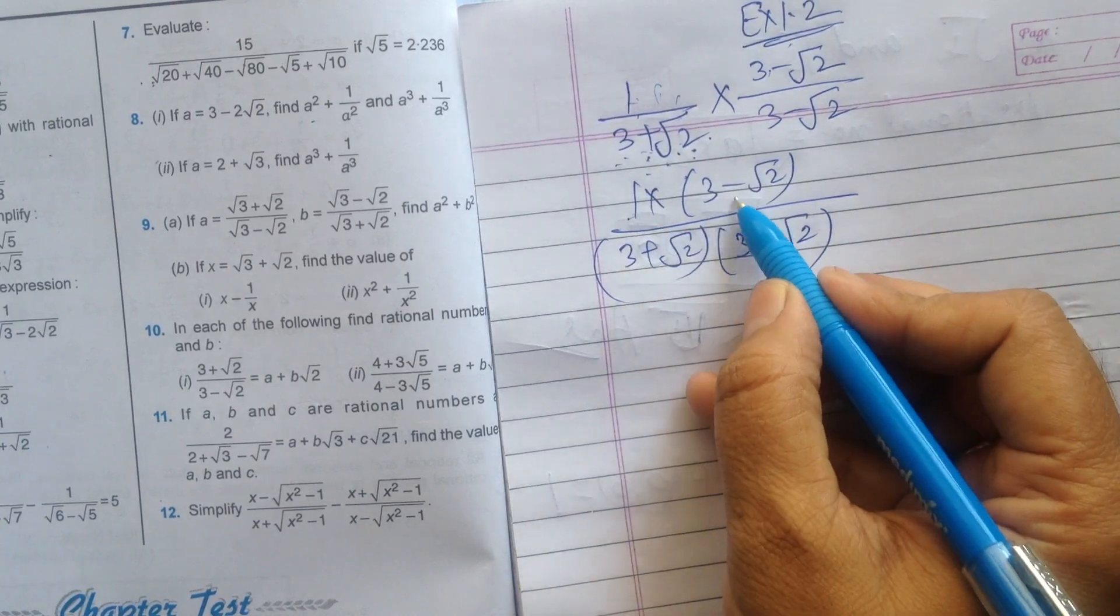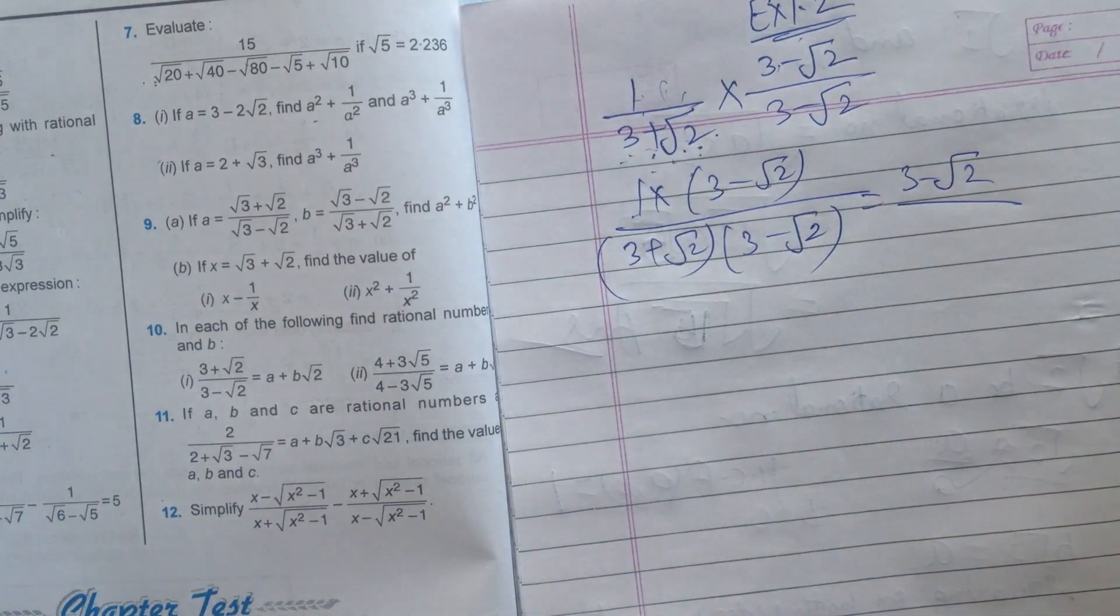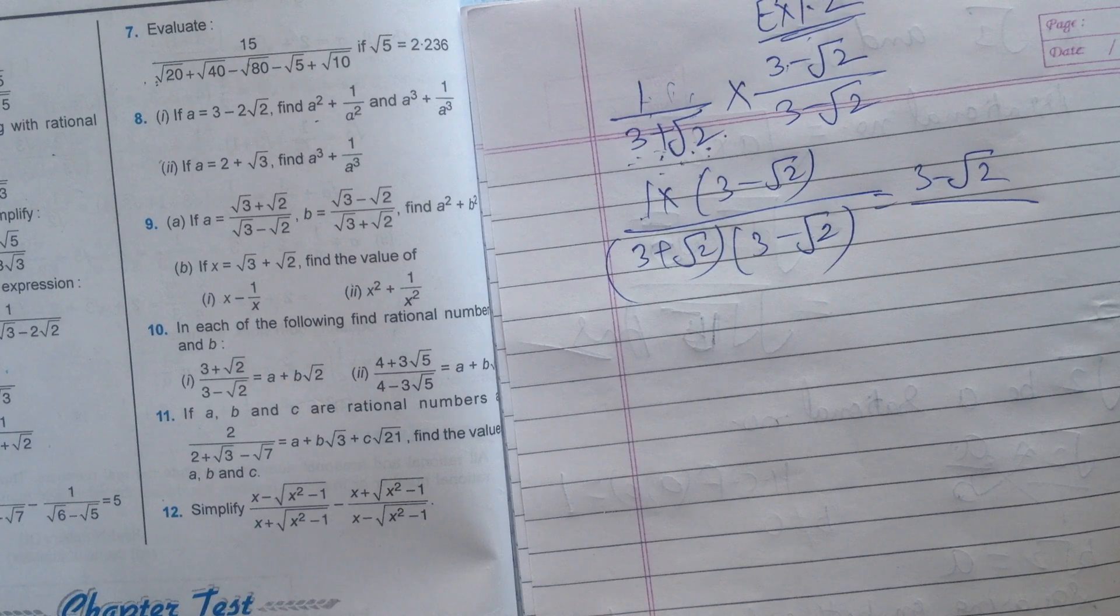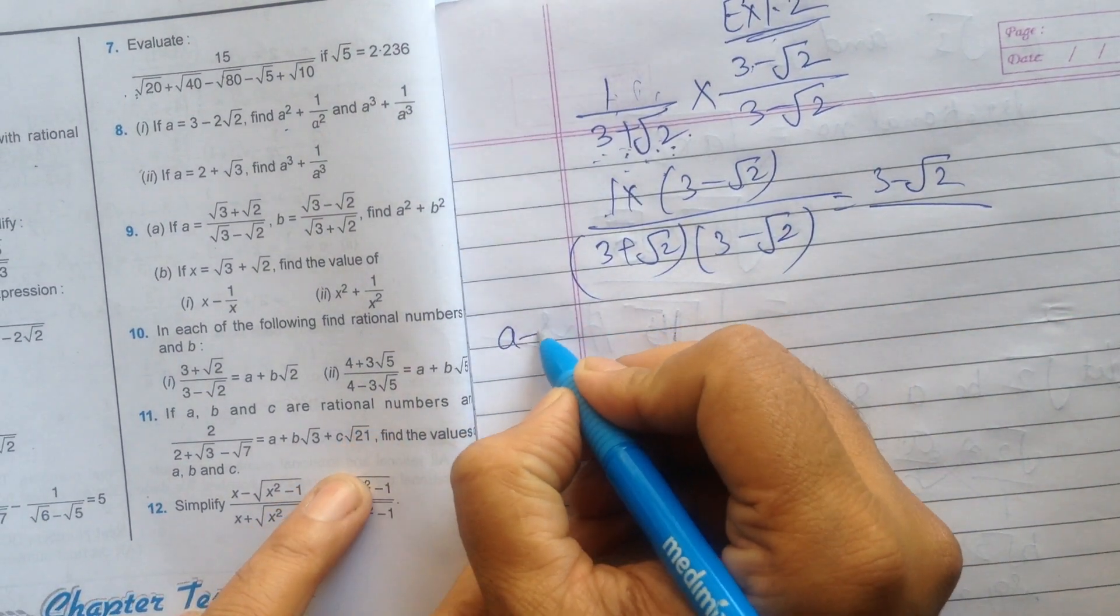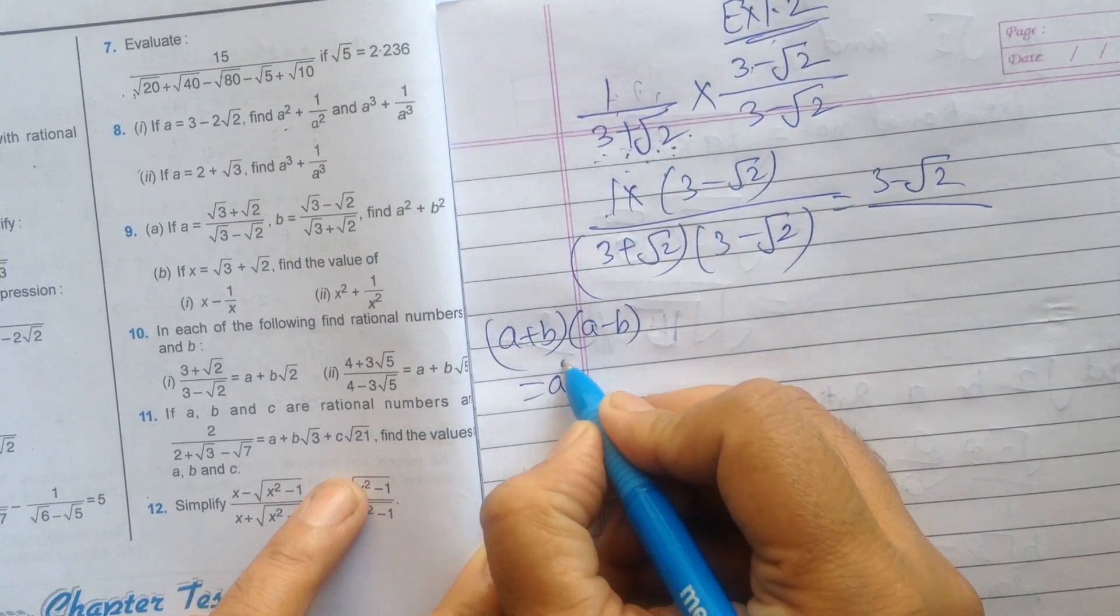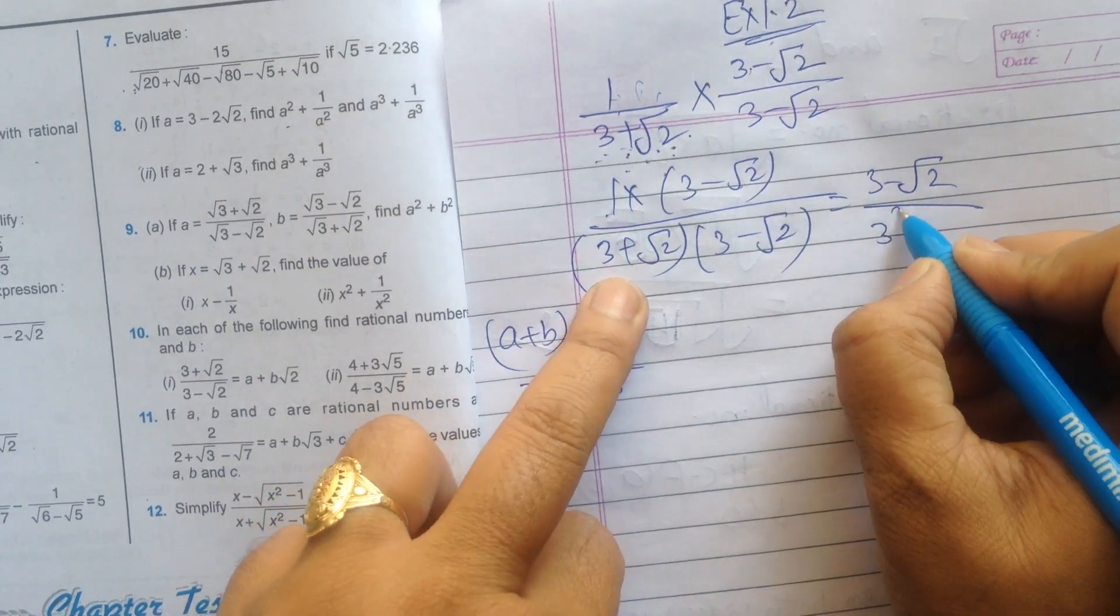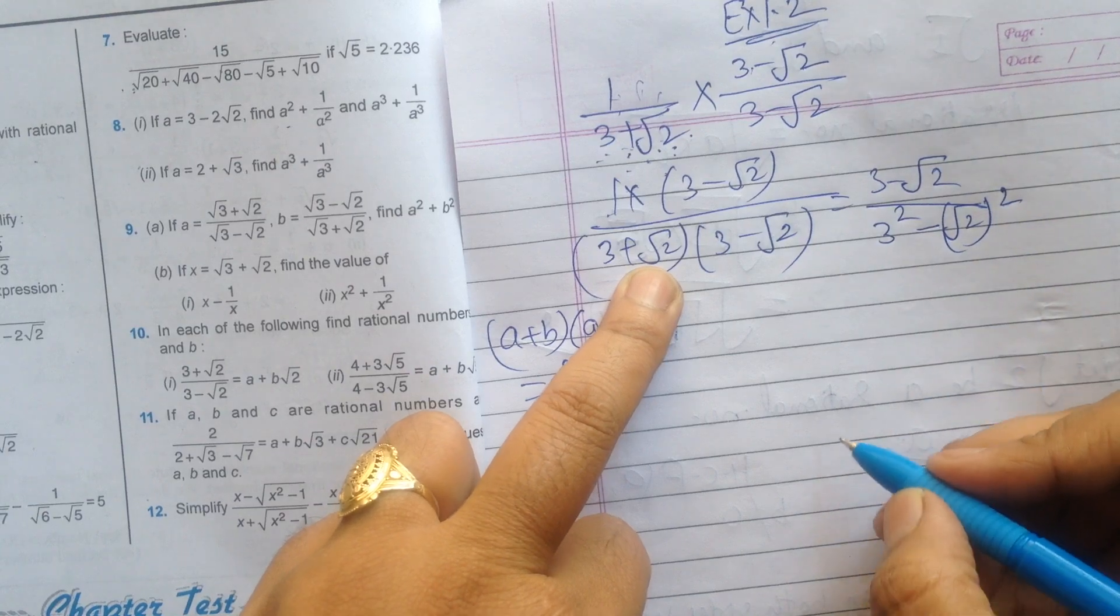One will be multiplied with 3 minus square root 2. 3 plus square root 2 will be multiplied with 3 minus square root 2. When we multiply one, we will get the same answer. And in the denominator, one factor is positive and one is negative. So here the formula will apply: a plus b into a minus b is equal to a squared minus b squared. So a is 3, 3 squared, b is square root 2, square root 2 whole squared.